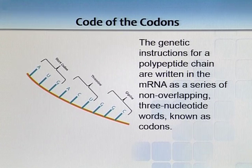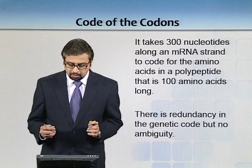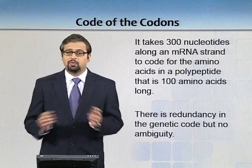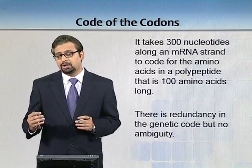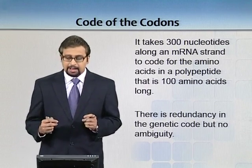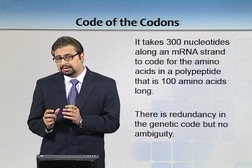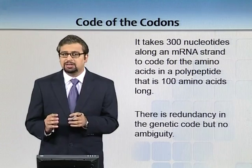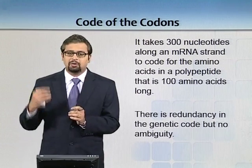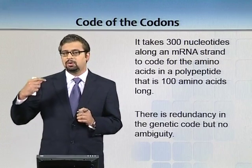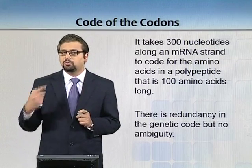When we are doing recombinant DNA technology, that's how we ultimately select these codons to make our required protein. Because it's a triplet codon, it takes 300 nucleotides along an mRNA strand to code for 100 amino acids — whatever number you have in mRNA, just divide by 3 to get the number of amino acids produced. With 64 codons for only 20 amino acids, there is redundancy — different codons coding for the same amino acid — but there is no ambiguity. It never happens that the same codon codes for two different amino acids in a particular organism.